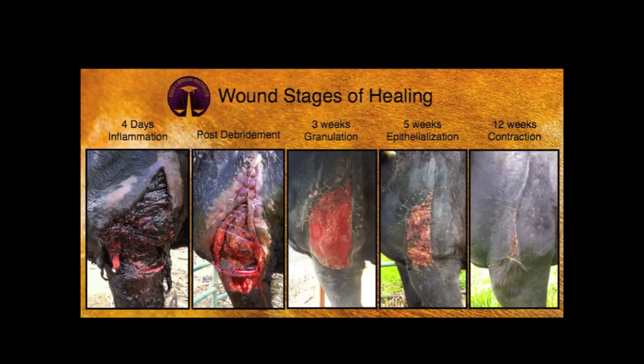These photos demonstrate a severe wound going through the stages of wound healing. The photo on the left shows the wound after it went through the inflammatory phase. The second photo details the wound after it was debrided and sutured. The third photo was taken at three weeks and shows a healthy granulation bed. By five weeks, epithelialization was occurring, and by 12 weeks, the wound had contracted significantly.